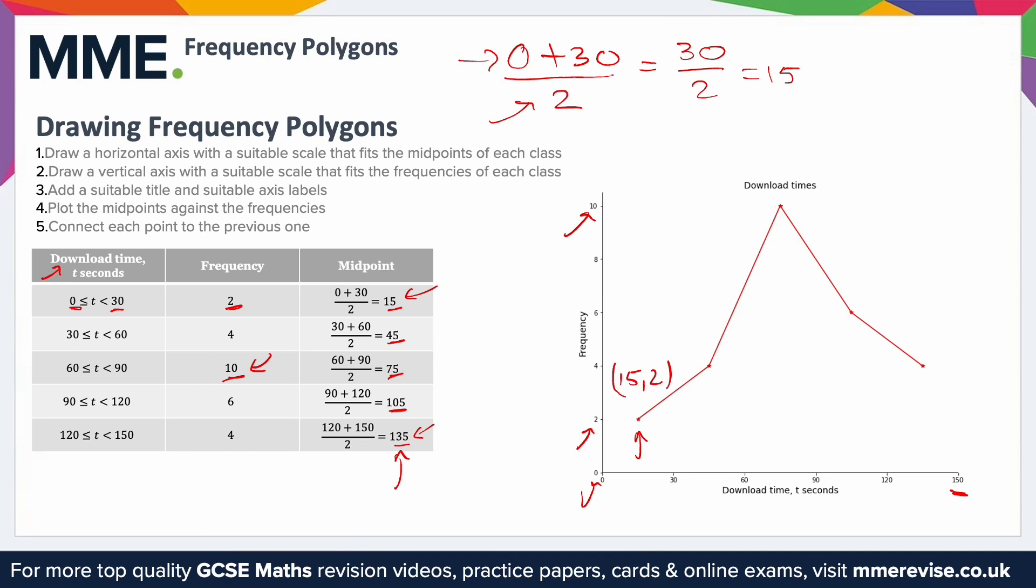This point is plotted at 15, 2, because the midpoint was 15 for that class, like we calculated, and the frequency was 2. For example, this point was 75, 10, because the midpoint was 75, and the frequency is 10, and so on.